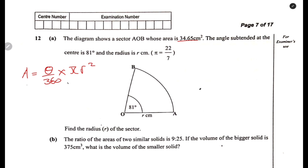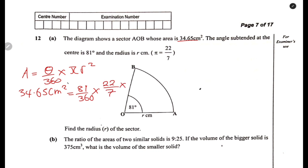We replace what we have. The area is given, so 34.65 equals the angle subtended, which is 81, over 360, multiplied by pi — which is 22 over 7 — then multiplied by R squared.